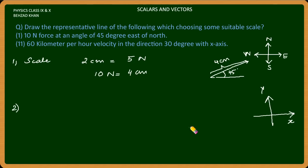60 km per hour velocity in the velocity direction 30 degree. First of all we have to define scale. Let's suppose 20 km per hour equals 1 cm. 60 km per hour, how much is it? So 3 cm.